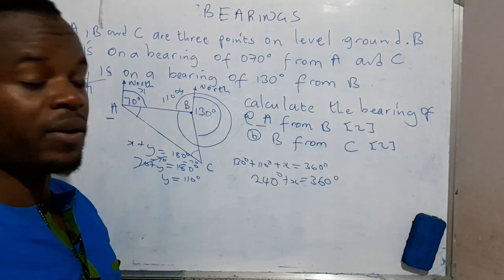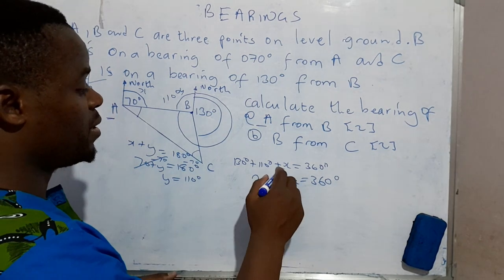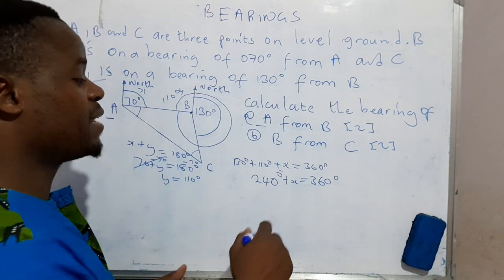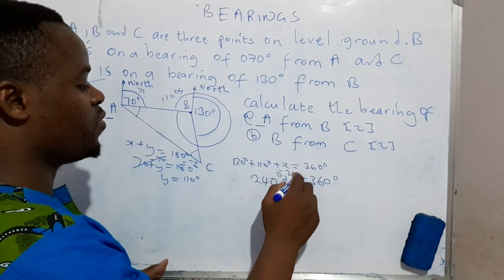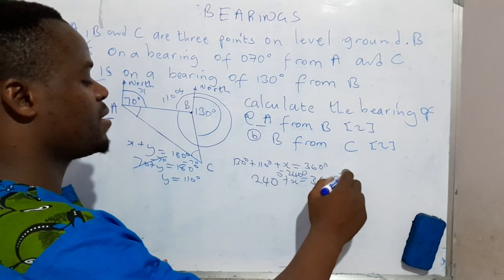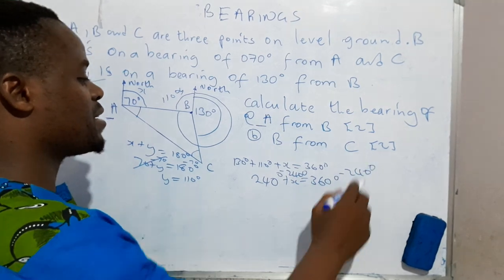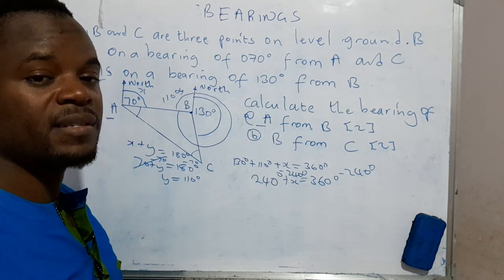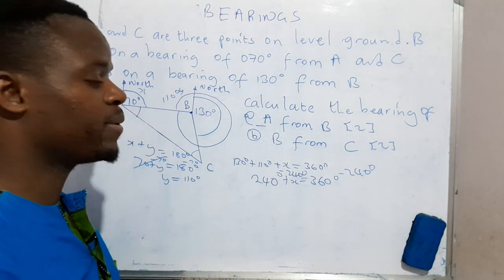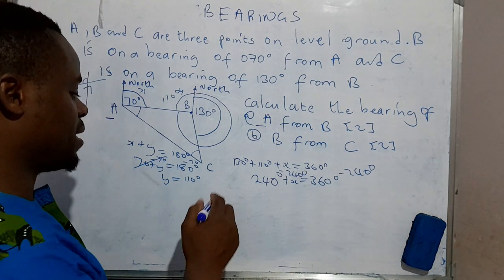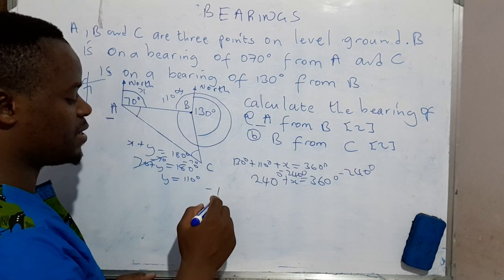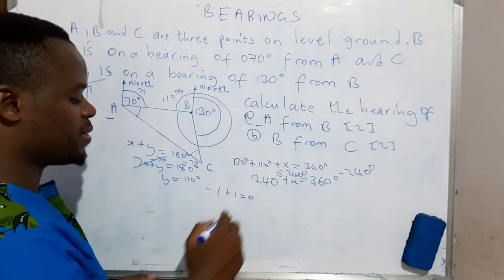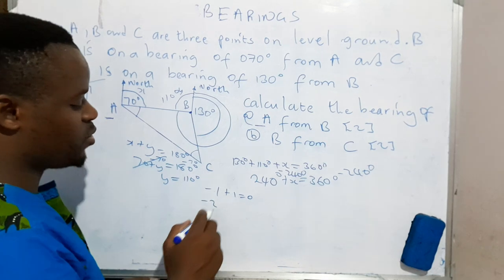So what do we do? We'll bring in the additive inverse, which is negative 240 degrees. Just in case you have a question on what an additive inverse is: an additive inverse is the number which, if added to another number, gives you zero. So negative 1 plus 1 equals zero. If we have negative 2, the additive inverse of negative 2 is plus 2. When these two are added, they'll give us zero.